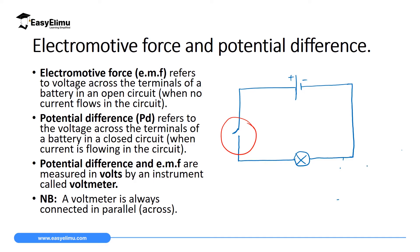If you bring a voltmeter — which we always connect in parallel — the positive terminal of the cell is connected to the positive terminal of the voltmeter, and the negative terminal of the cell is connected to the negative terminal of the voltmeter. Whatever the voltmeter reads when the switch is open is the EMF. So EMF is the voltage across the terminal of a battery when the switch is open, or when current is not flowing in that circuit.